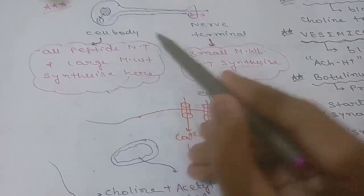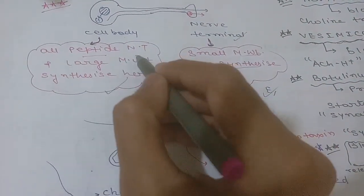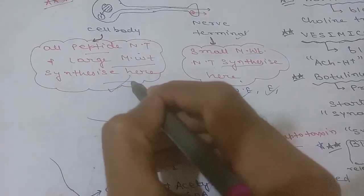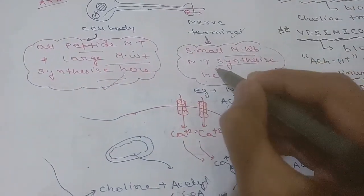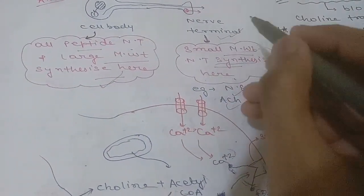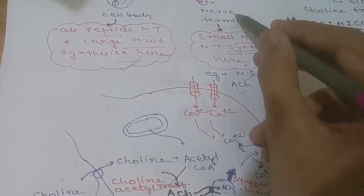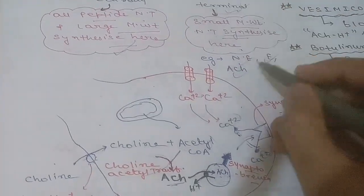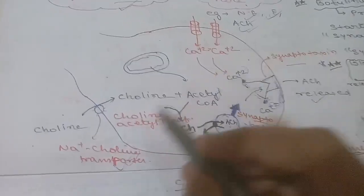Neurotransmitter synthesis occurs in either the cell body or nerve terminal. In the cell body, peptide neurotransmitters and large molecular weight neurotransmitters are synthesized. Small molecular weight neurotransmitters — including norepinephrine, epinephrine, and acetylcholine — are synthesized in the nerve terminal.